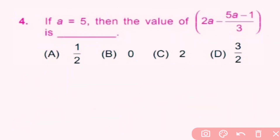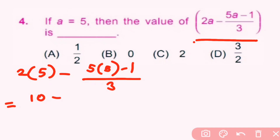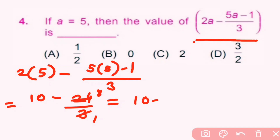Question 4: If a = 5, find the value of the expression. Substituting a = 5: we get 2×5 = 10 and 5×5 = 25, so 25 − 1 = 24/3 = 8. Then 10 − 8 = 2. So option C is the correct answer.